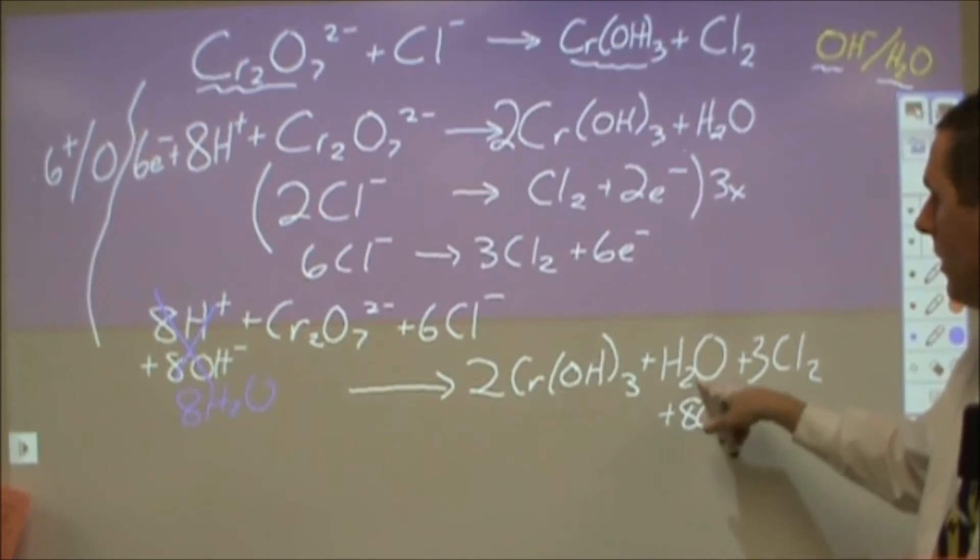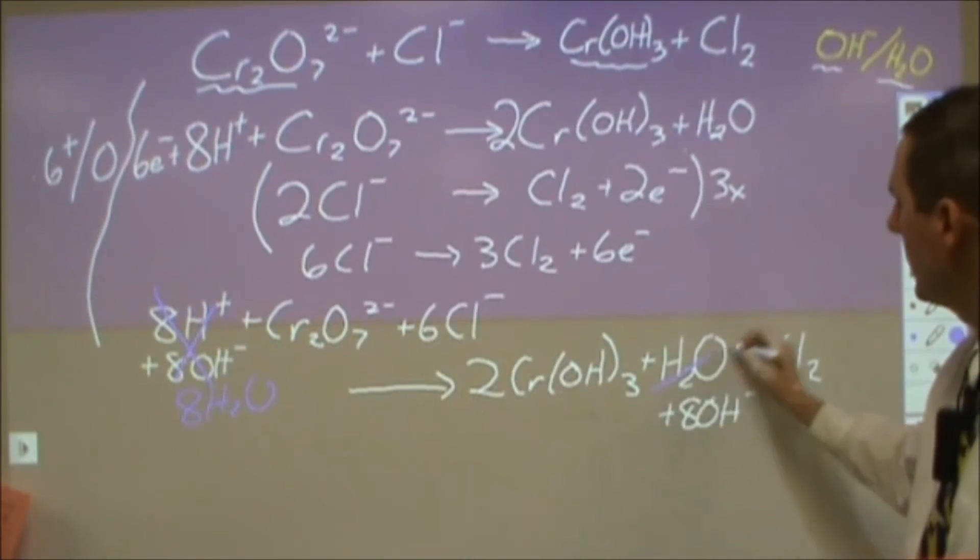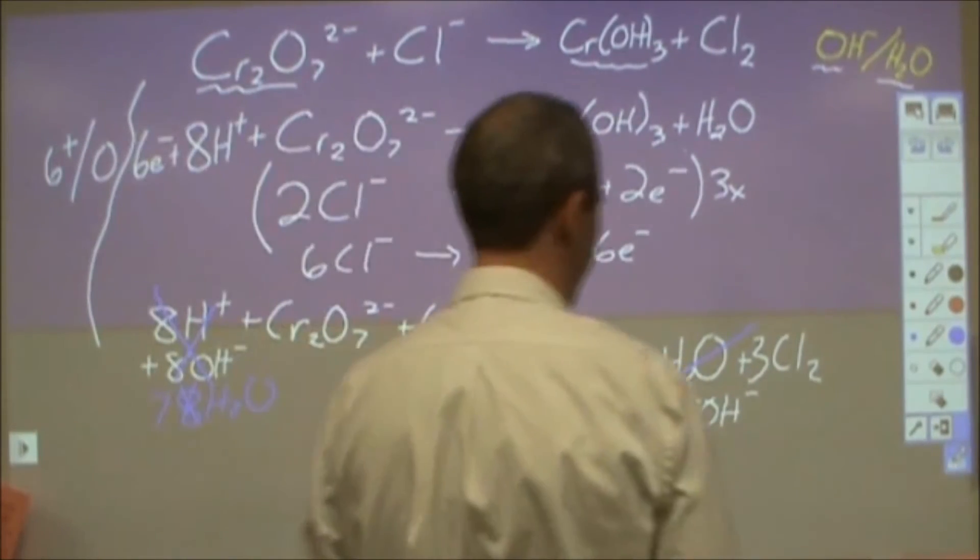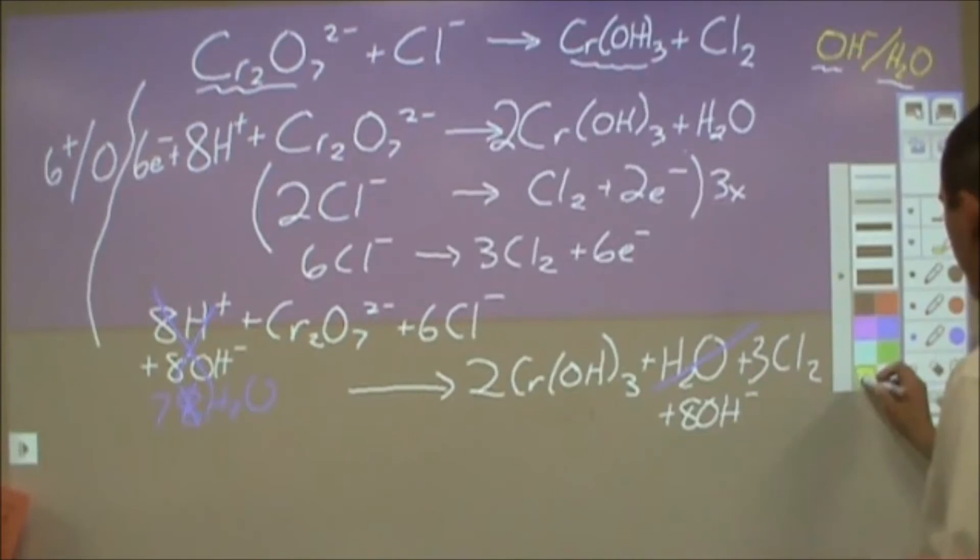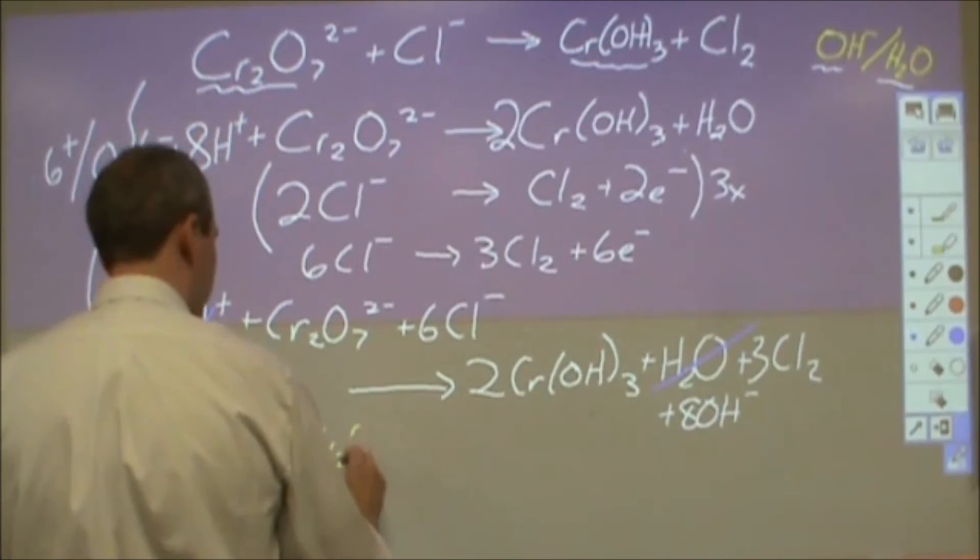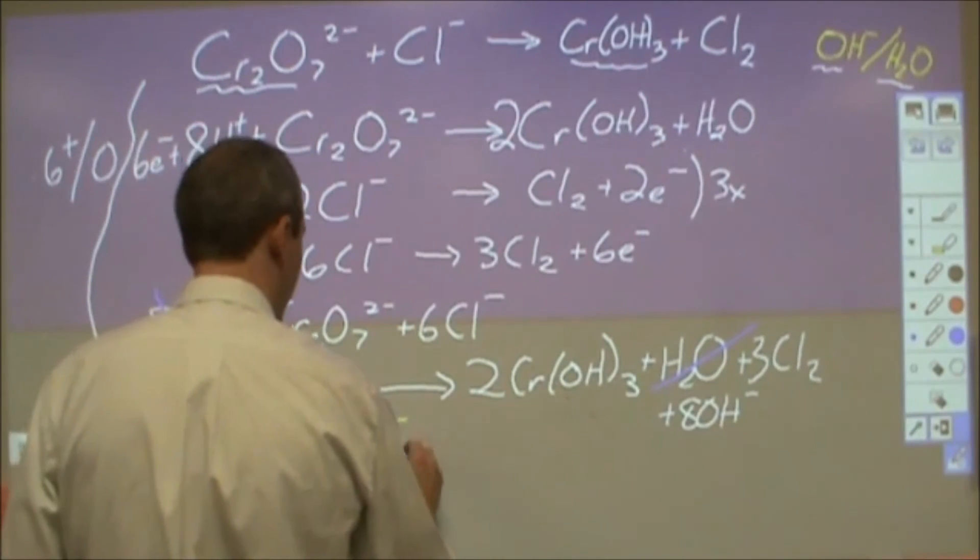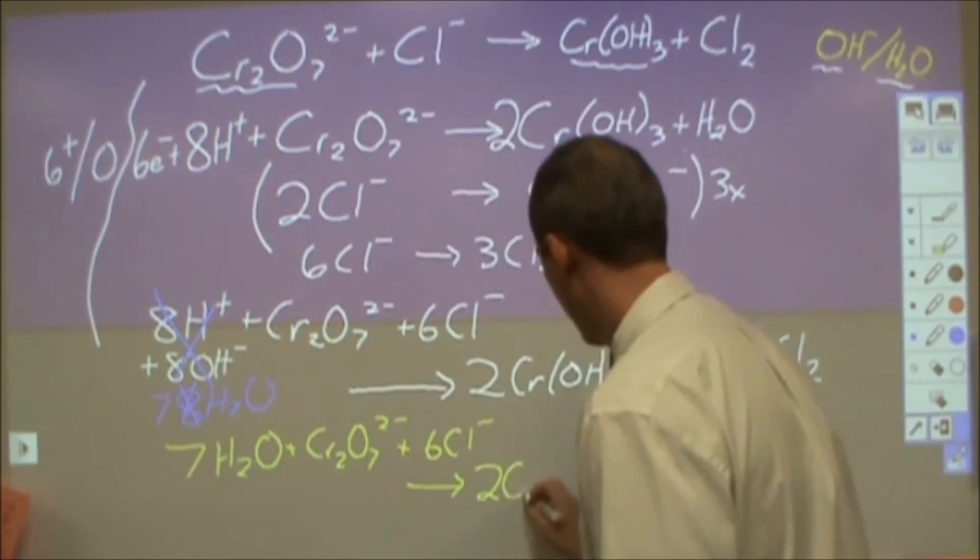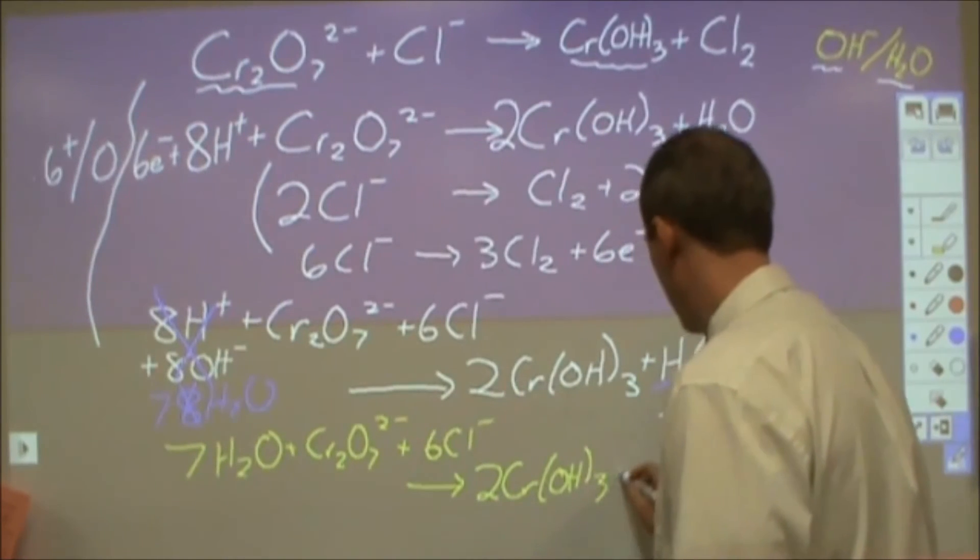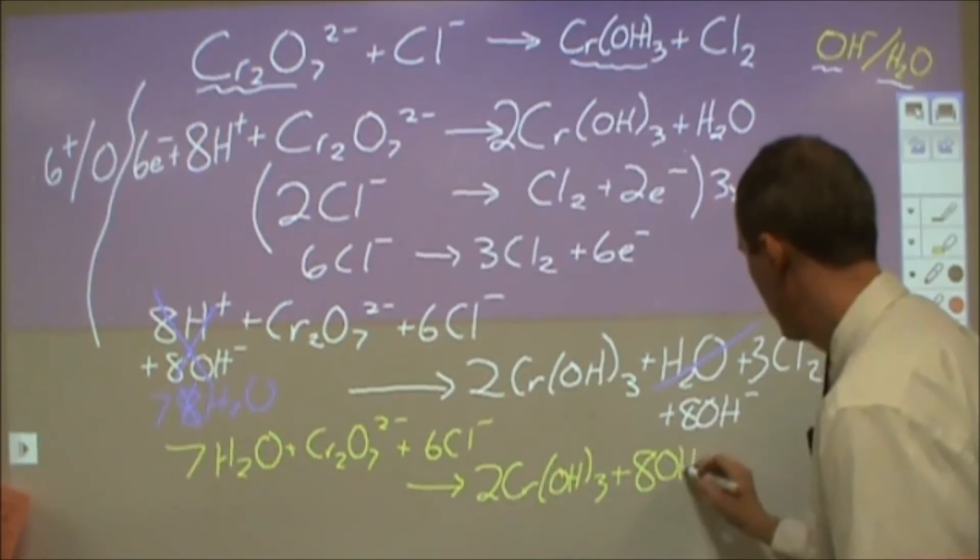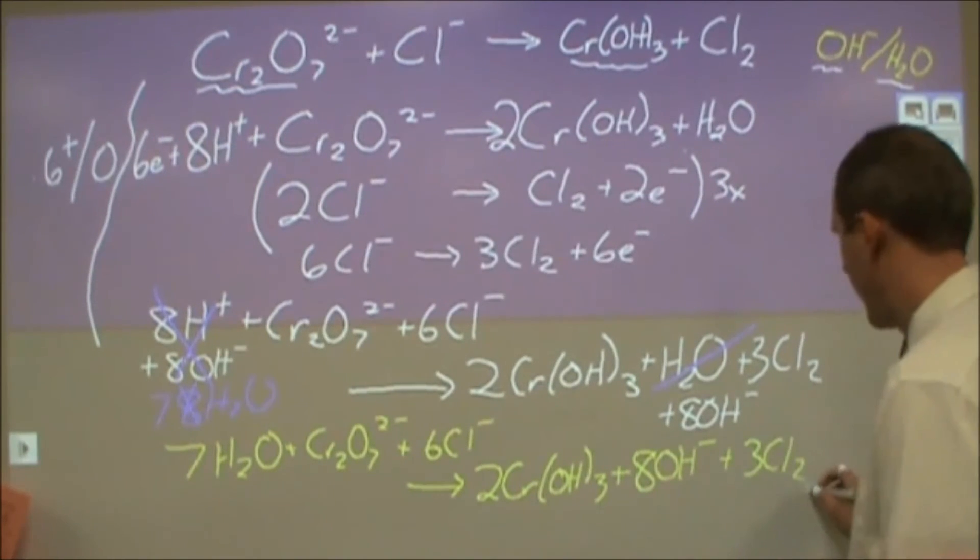Now the eight waters on that side and I have a water over here, this is going to end up canceling. And instead of eight net I will end up with seven. So my very final reaction is all the things cancelled out. I end up with seven water molecules plus a dichromate plus six chlorides becomes two of the chromium hydroxides. The water cancelled but I still have my eight hydroxides and three chlorine gas molecules.